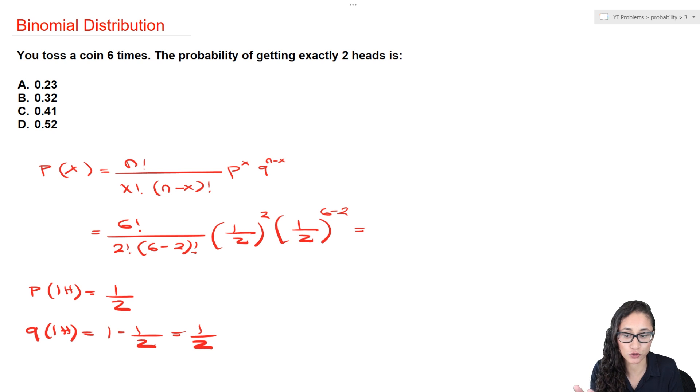So just remember, when you're using this equation, when you're trying to find the probability, you find it for just one case, and then usually the exponent takes care of how many times you want to get that one head.